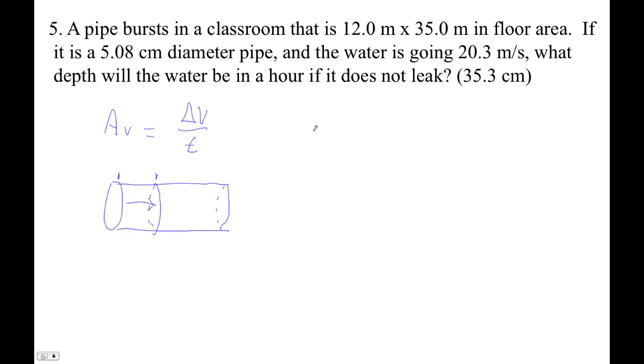Okay, so I'm going to do area times velocity: pi times 0.508 divided by 2 squared—that's pi r squared—times the velocity, which is 20.3. And this will give us our volume flow rate.